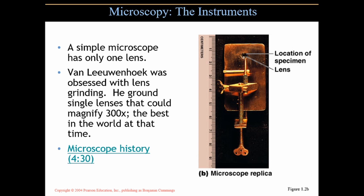A little bit of history. A simple microscope is one that has only one lens. In the late 1600s and early 1700s, there was a Dutch merchant who made his money by making tapestries and drapery for windows. His name was Antony van Leeuwenhoek, and I talked about him in our first chapter when we discussed microscopes and their invention. Van Leeuwenhoek's job was as a merchant selling tapestries and making drapes, but his obsession was microscopy.